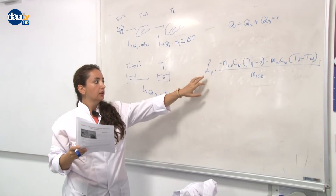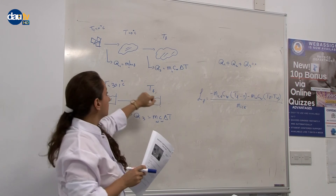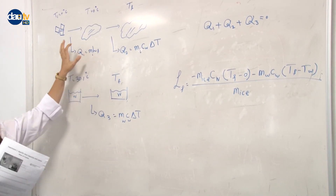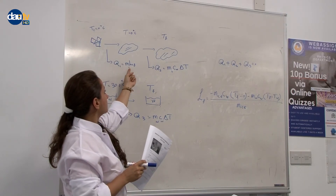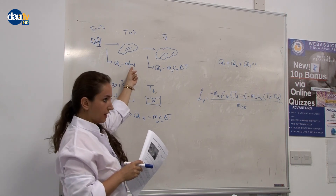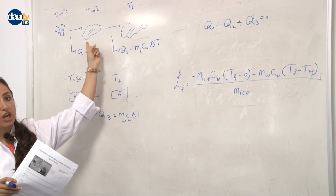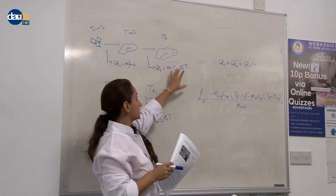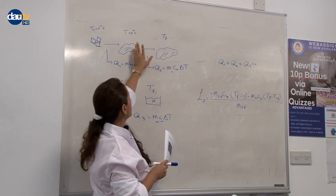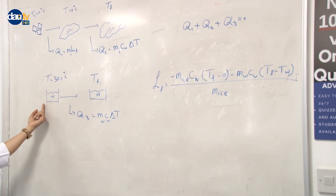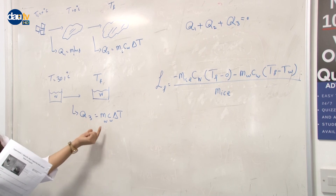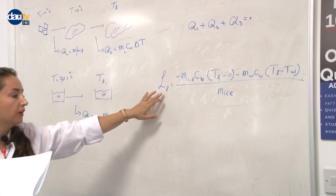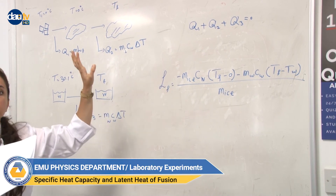For the latent heat, there are three different heat steps. First, Q1: ice melts from 0°C to water at 0°C — a change of phase — so Q1 = m_ice × L_f (our unknown). Second, Q2: melted ice warms from 0°C to final temperature — Q2 = m_ice × C_water × (T_final − 0). Third, Q3: water cools — Q3 = m_water × C_water × ΔT. Rearranging gives the equation to solve for L_f.